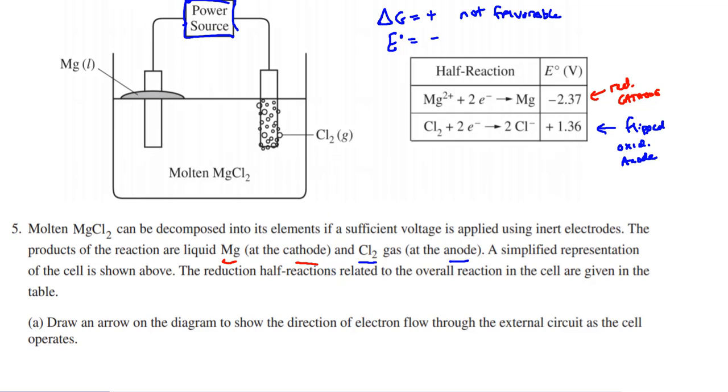And so what direction will the electrons flow? The electrons always flow from anode to cathode, from anode to cathode. And that was part A, draw an arrow in the diagram to show the direction of the electron flow. It always goes from anode to cathode. And let's think about what's happening here.